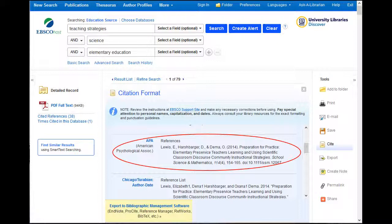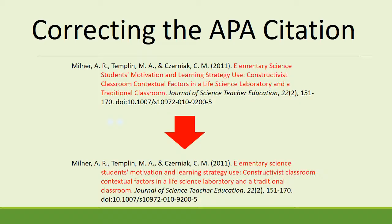When copying this citation into a Word document, you will most likely need to fix one part of the citation: the title. The rule for APA sixth edition is that the only words in the title that should be capitalized are the first word of the title, the first word of the subtitle, and any proper nouns or adjectives. The database does not fix the citations for capitalization — in the first version every word of the title is capitalized, but in the second version the errors are corrected.